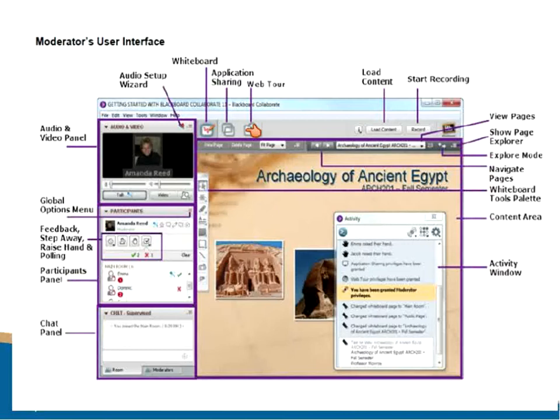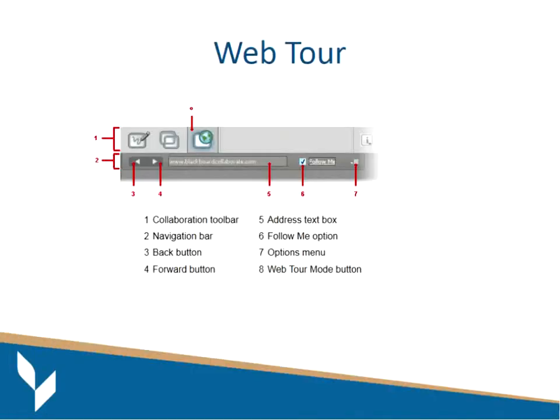I'm going to stop this quickly because we don't have time for the whole thing, but I wanted to show you what this would be useful for so you can see how it actually transmits and works. The web tour — when I added that URL in, I copied and pasted it in here, so of course it has to be a forethought of what you want to show ahead of time, and you have to have those links available to copy and paste directly in here. You would make sure that the follow button is clicked so that participants are following you. I can actually click on this and send the URL directly into the chat box, so if anybody wanted it later, they could have it.